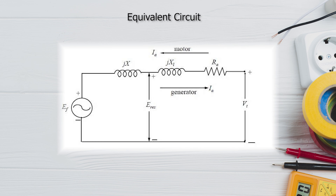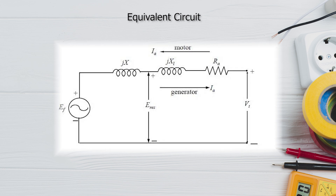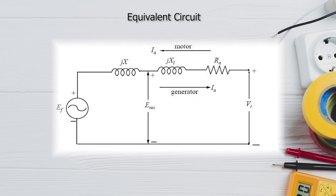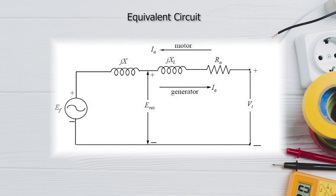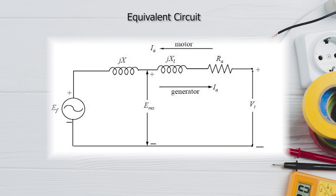In the equivalent circuit, we have EF — the induced EMF in the machine — then the armature reactance Jx, and then the armature reaction. Together, these reactances are combined and called the synchronous reactance. We also have the armature resistance connected. These three factors lead to some voltage drop, and the terminal voltage Vt will be slightly less than the generated EMF when current flows in the generator direction.